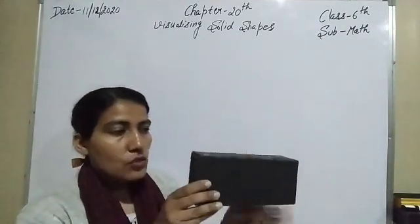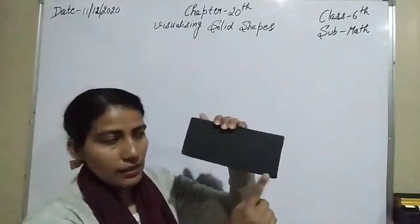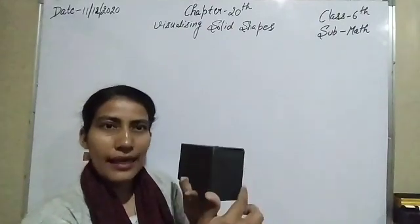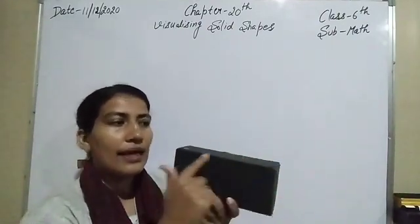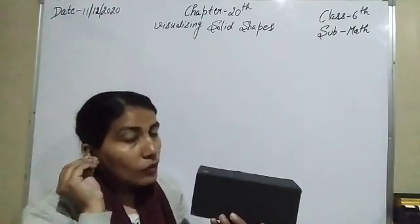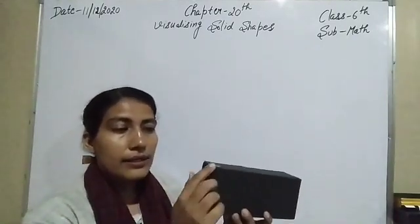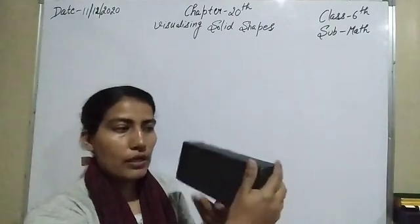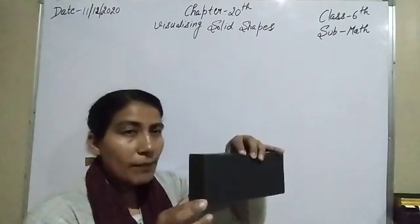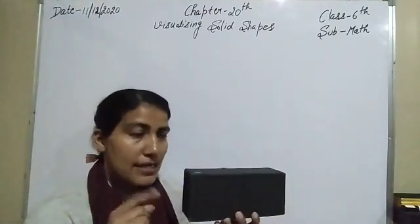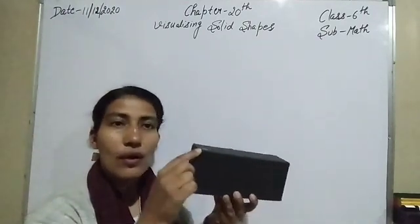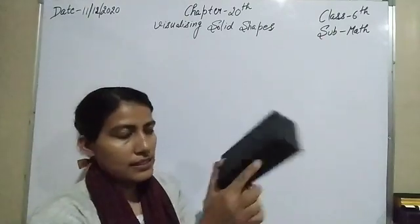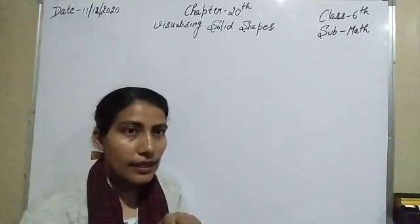I'm going to repeat the edge count from the bottom position: one, two, three, four — and then five, six, seven, eight, nine, ten, eleven, and twelve. So twelve edges are there. Now for the vertices — the corners connected with the edges — this one is one, two, three, four, five, six, seven, eight. So eight vertices are there.